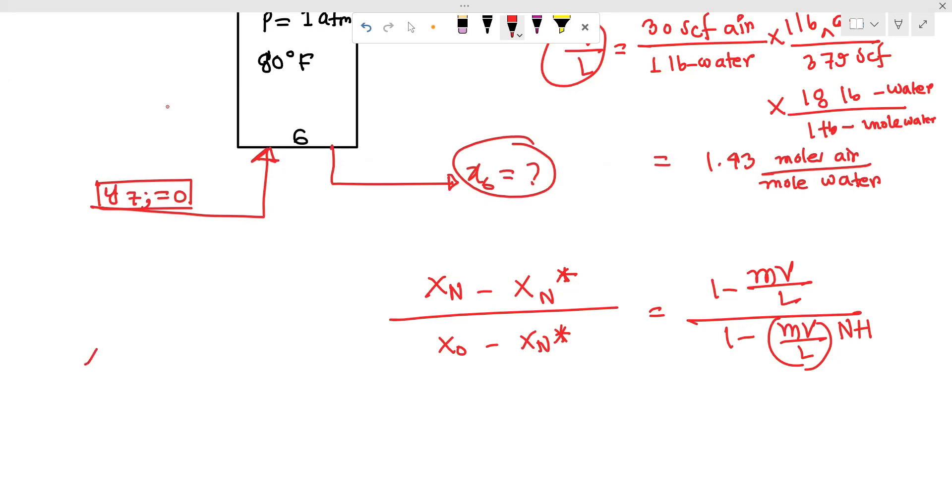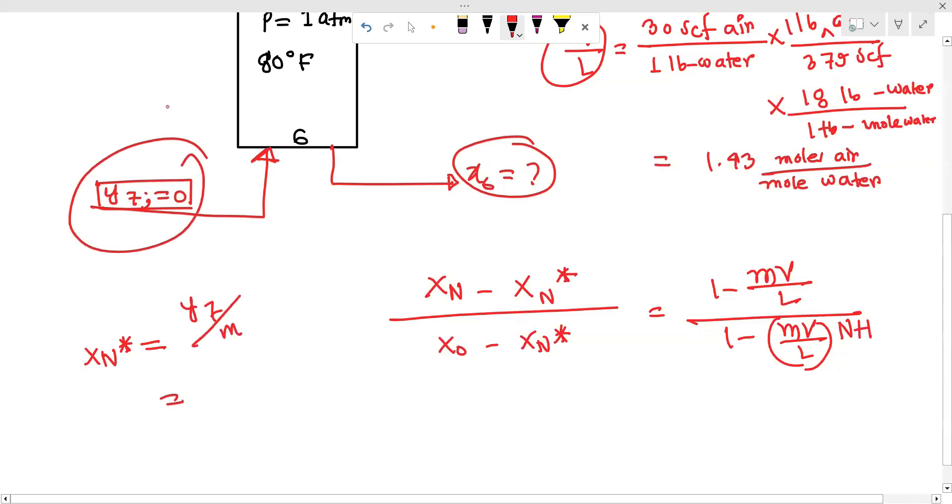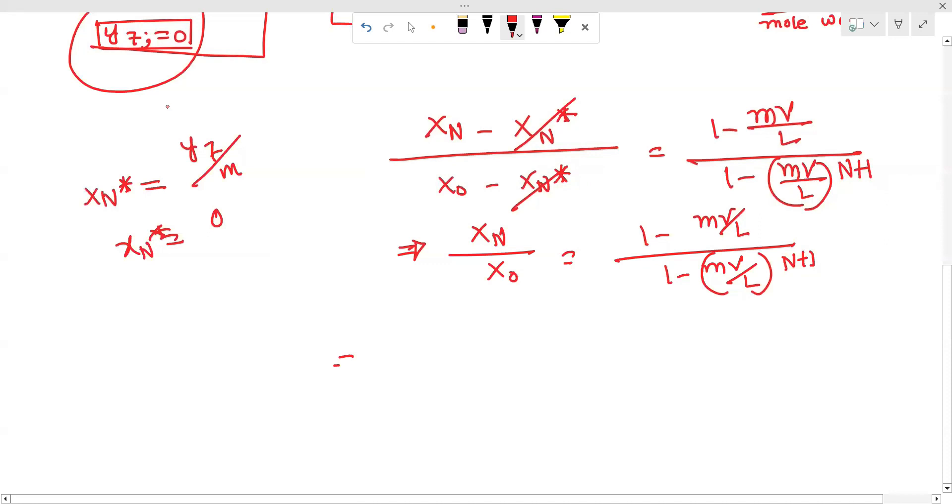xn star over yon - as y7 is equal to 0, meaning xn star over yon is 0. So xn by x0 is equal to 1 minus mV/L divided by 1 minus (mV/L) to the n plus 1 power. We'll use the graphical method. n plus 1 is 7, and mV/L is 1.43.